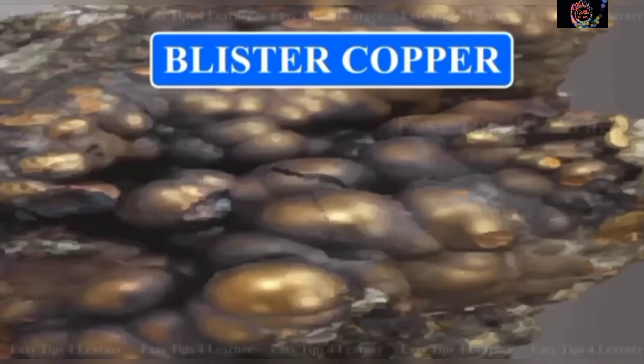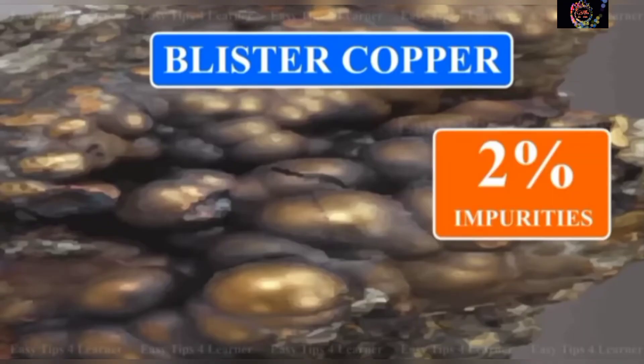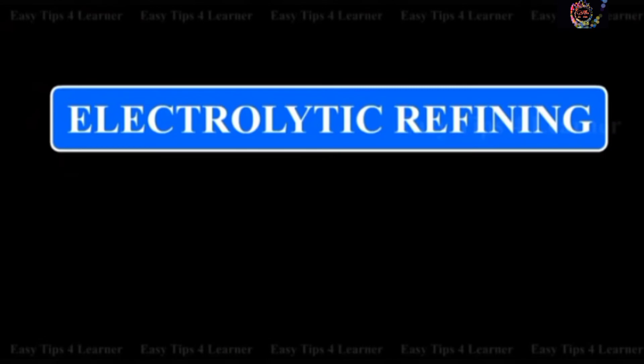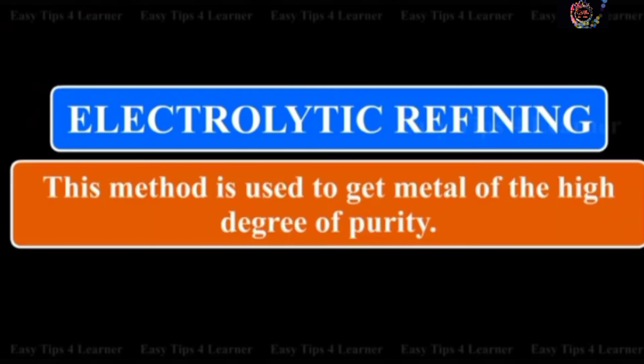The fifth step is refining. Blister copper contains about two percent impurities and is purified by electrolytic refining. This method is used to get metal of a high degree of purity.